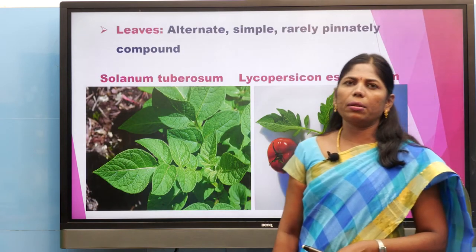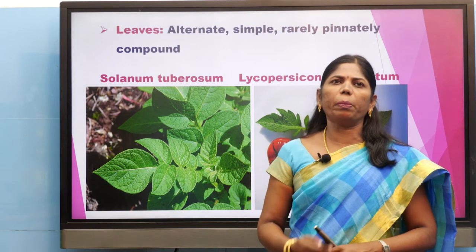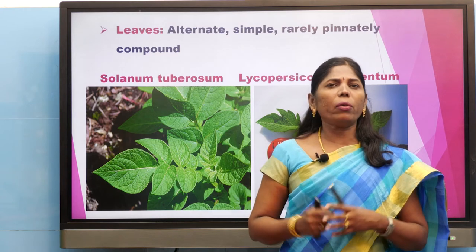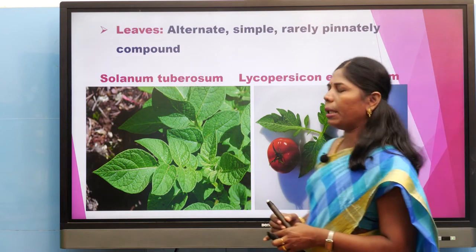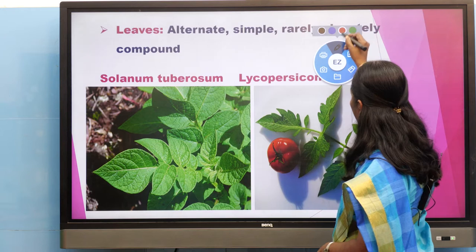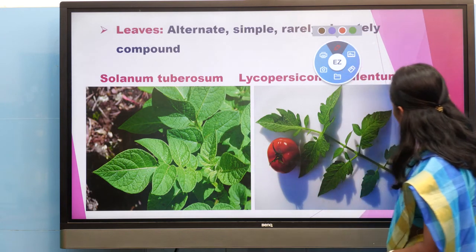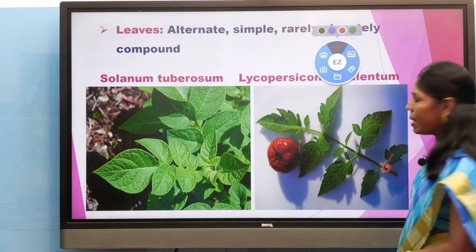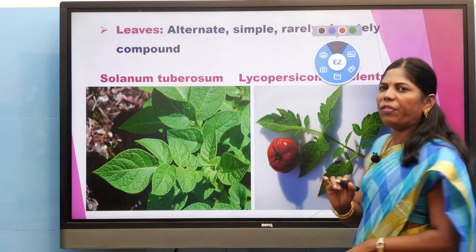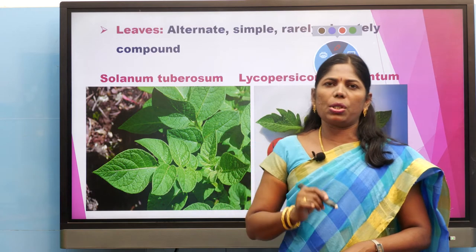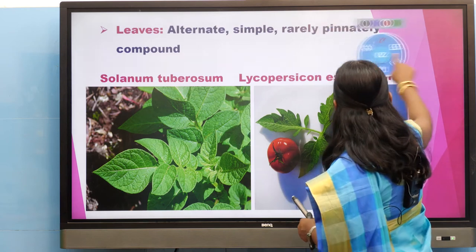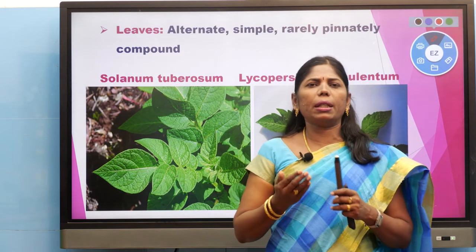Next we see the leaves. Leaves are used to prepare food material. The leaves are arranged in an alternate condition — each node gives rise to a single leaf. If two leaves arise from the same node that is opposite condition. The leaves are alternate and simple — simple means no modification in the leaf margin.